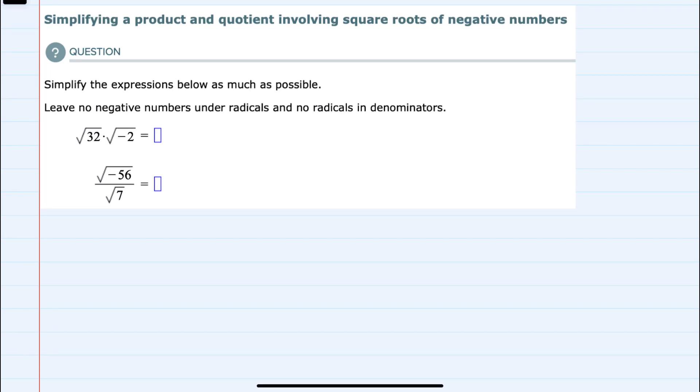In this video, I'll be helping you with the problem type called simplifying a product and quotient involving square roots of negative numbers. We're asked to simplify these expressions as much as possible and to not leave negative numbers under the radicals and also not leave any radicals in the denominator.